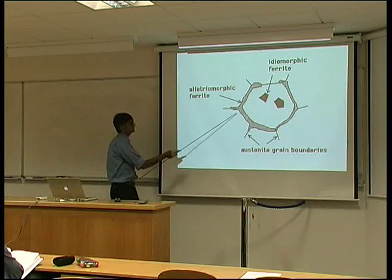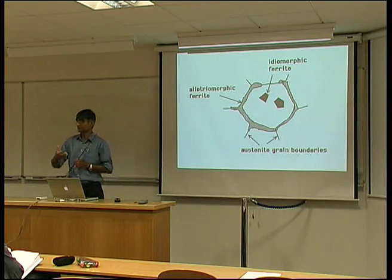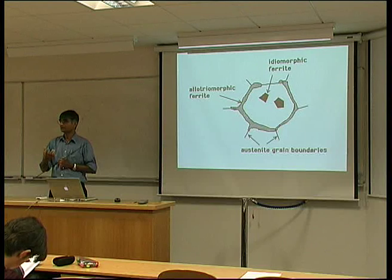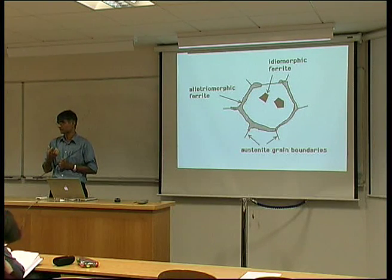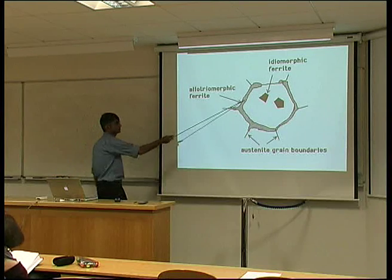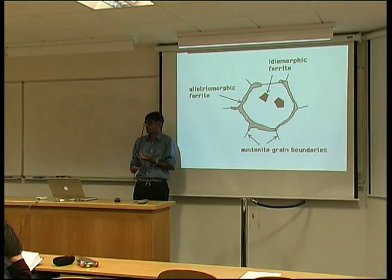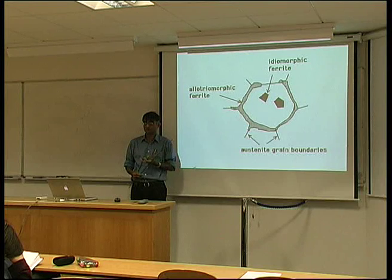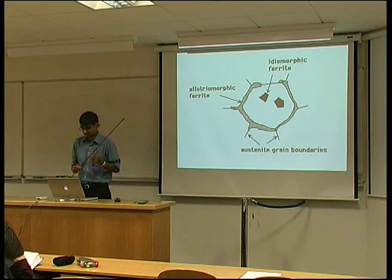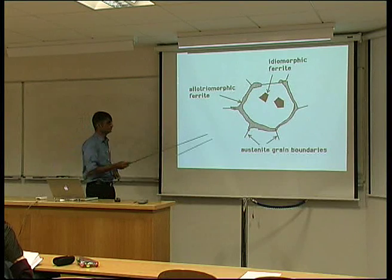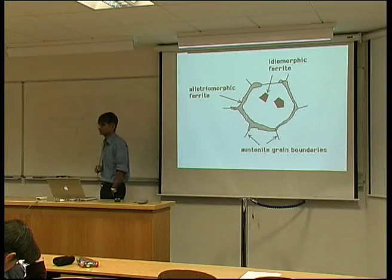And that's why this kind of ferrite is known as allotriomorphic ferrite. Allotriomorphic comes from the Greek, meaning that the shape of that ferrite does not reflect its crystalline symmetry. You can see here that it's grown along the grain boundary — there's nothing to indicate that it's got a body-centered cubic structure or crystallographic facets of any kind. So ferrite which grows at the austenite grain boundaries is known as allotriomorphic ferrite.